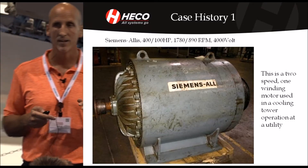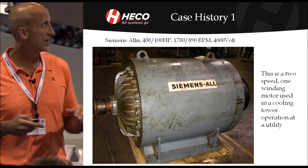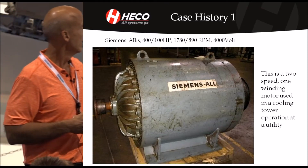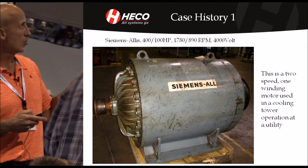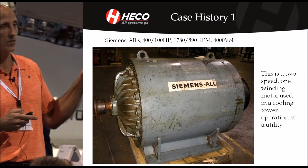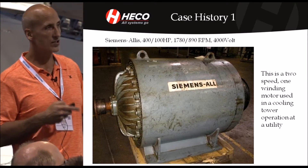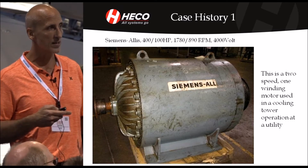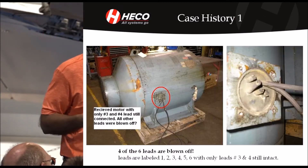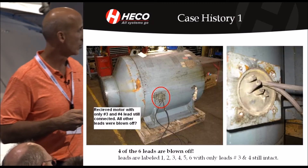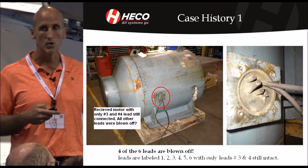So here's a case history. A 400 horsepower, two-speed, one-winding motor used in a cooling tower application at a utility, and we're just going to kind of bounce through here.